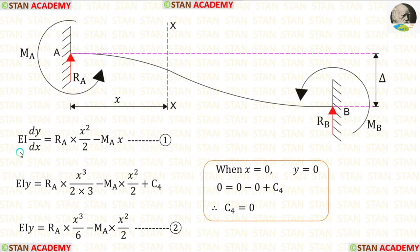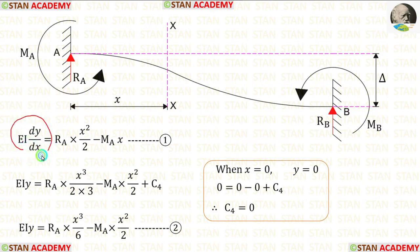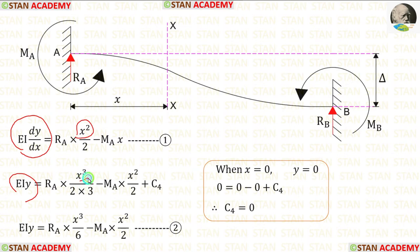Now, let us integrate this equation on both sides. When we integrate EI dy/dx, we will get EI y. When we integrate x², we will get x³/3.